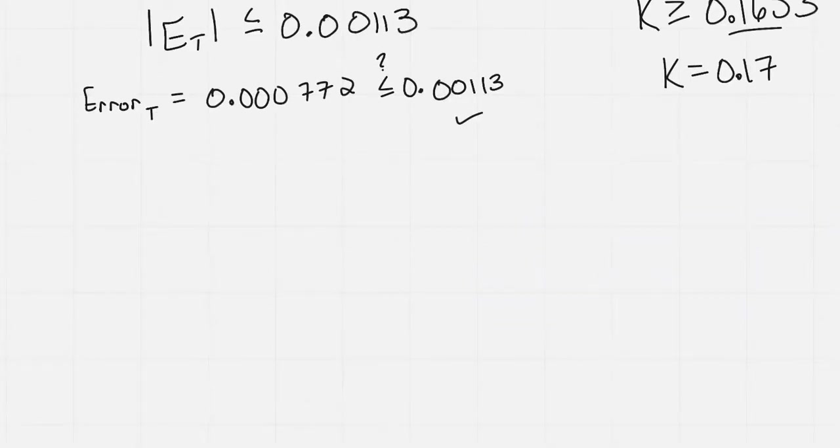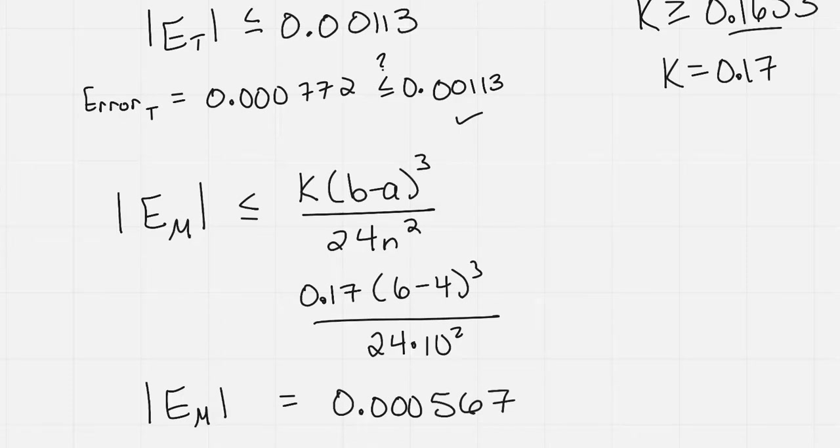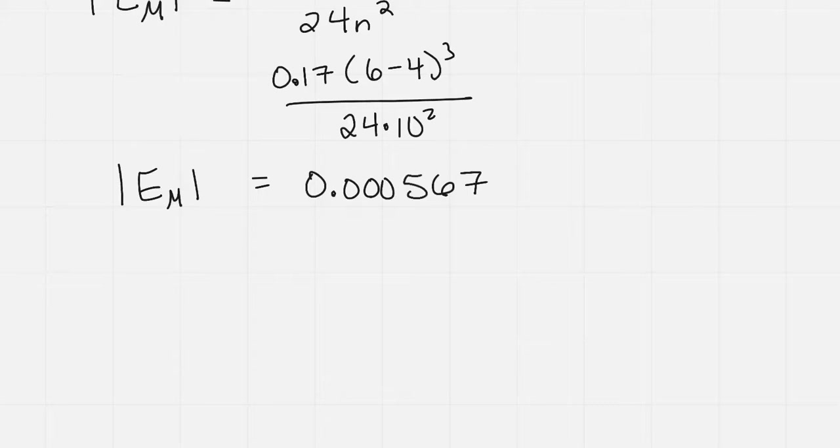And so you can do this with all of your error bounds. So we have for midpoint, it's absolute value of the error of the midpoint is less than or equal to k times b minus a cubed all over 24n squared. And this is again where k has to be the max of the second derivative. So I'm going to get to use that 0.17 again. And then 6 minus 4 cubed all over 24 times 10 squared. And so the value I get here for my error of my midpoint is equal to 0.000567. And I'm going to pull in the error I calculated earlier when I did n equals 10. And my error earlier on my midpoint was negative 0.000386. So the absolute value of that would be positive 0.000386.